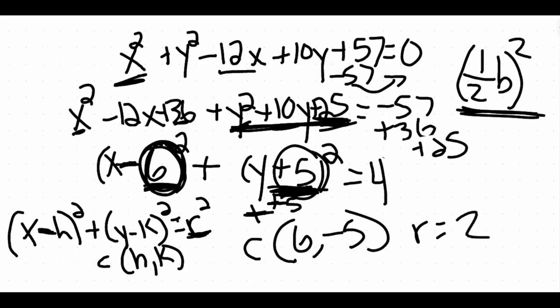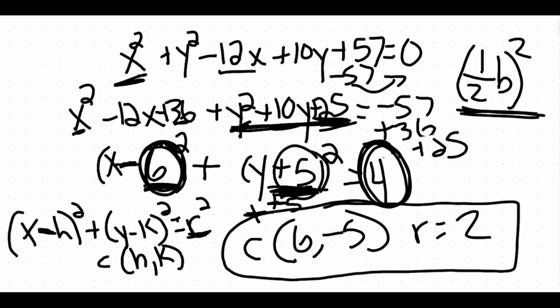And our radius is going to be a 2. This 4 over here is our radius squared. We only want the radius. So the opposite of a square is a square root. So we have a center of a 6, negative 5. And our radius is a 2. So we can go ahead and graph it based off this information if we wanted to. Just plot the point, 6, negative 5. We know that is the center of our circle. And just go out to two units in each direction. And we have our circle.